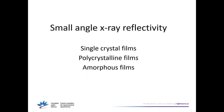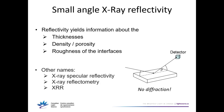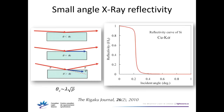Next, small angle X-ray reflectivity. This technique involves no diffraction — it's scattering from the surfaces and interfaces of thin films and will allow you to get information like thicknesses, density and porosity, and roughness of the interfaces. It can be found with different names: X-ray specular reflectivity, reflectometry, or XR. It's very useful for thin films.